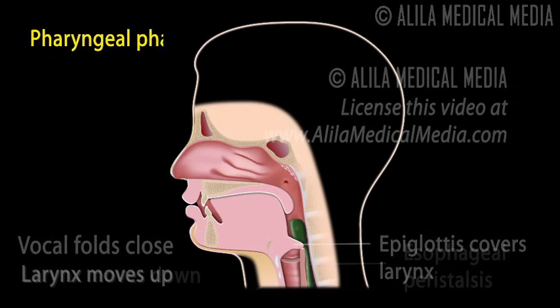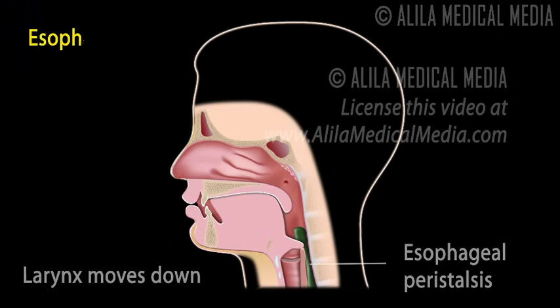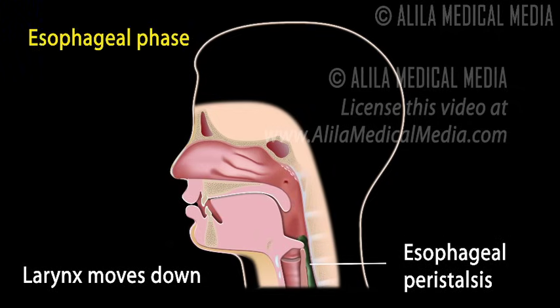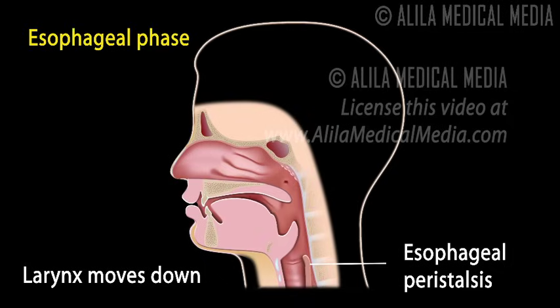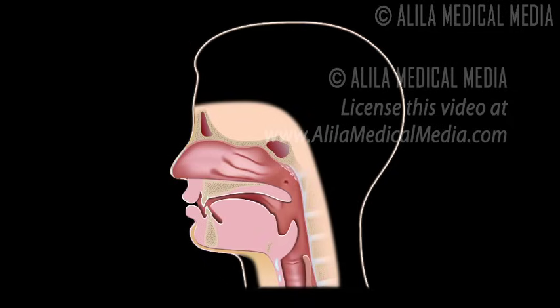The esophageal phase begins as the food bolus is propelled down the esophagus by peristalsis — a wave of muscular contraction that pushes the bolus ahead of it. The larynx then moves back down to its original position.